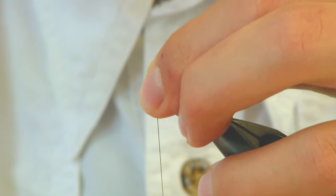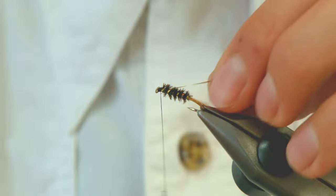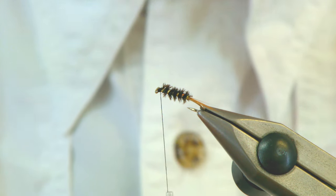Two turns, pull it all back, a few turns and then trim off your rib.